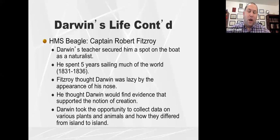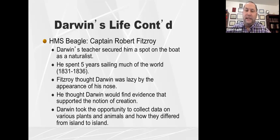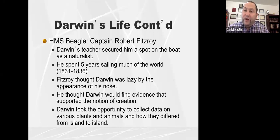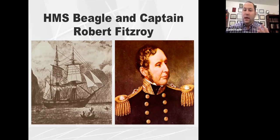Darwin spent five years sailing much of the world on Her Majesty's Beagle, and he took that opportunity to collect data. While people on the ship were taking their liberties — hanging out with locals, swimming on the beach — not Darwin. Darwin brought his jars and his sketchbook and tried to collect various species from island to island. If he couldn't fit them in his jars, he drew what the species looked like in his sketchbook.